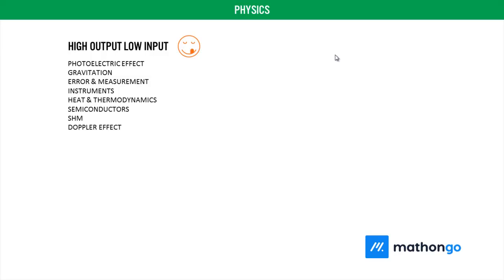For the last 10 years, regularly a question is coming from this. That's how we defined it: consistently for 10-12 years, you are getting one question without any doubt. In fact, sometimes two are coming, but at least one is coming. That is why we say high output, low input, because these don't take much time. Heat and thermodynamics topics are very straightforward in JEE. For example, Doppler effect - simple formula-based application questions come.